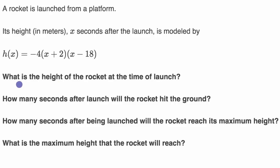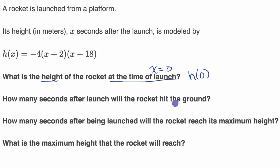The first thing they ask us is: what is the height of the rocket at the time of launch? Well, x is the number of seconds after the launch, so at the time of launch, x would be equal to zero. So we want to find h of zero. To figure out h of zero, we replace all the x's with zeros. So h of zero is going to be equal to negative four times zero plus two, which is two, times zero minus 18, which is negative 18.